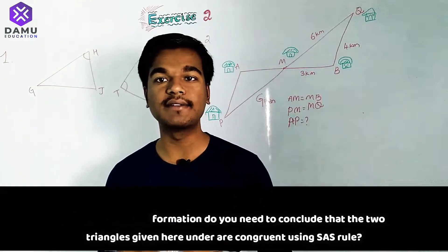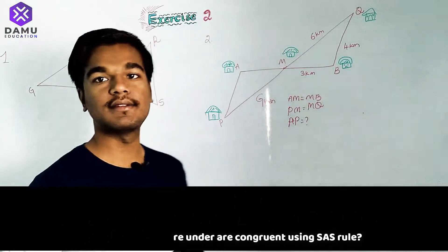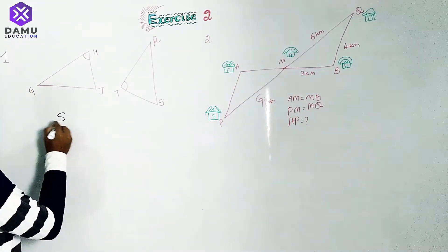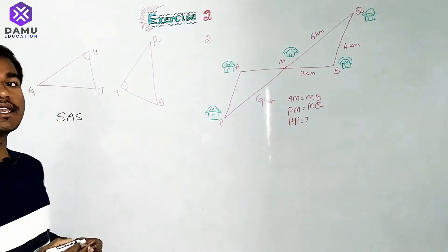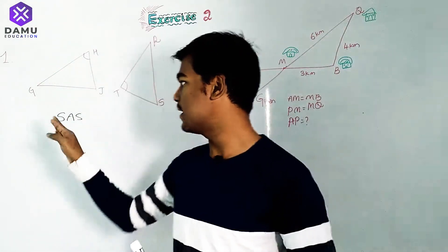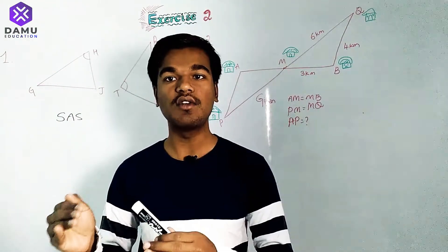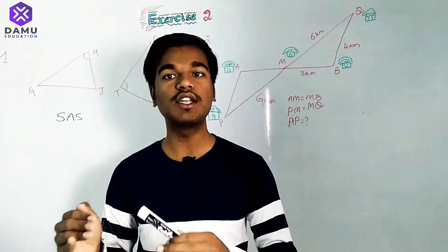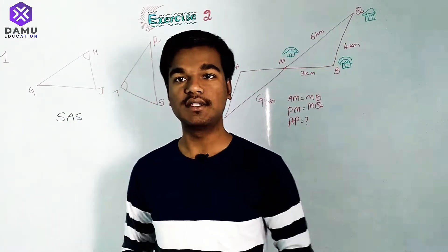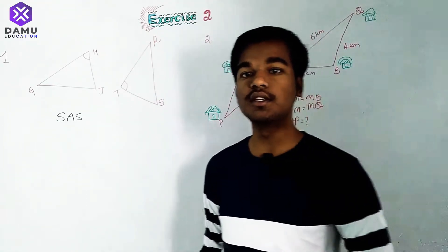They are satisfying the SAS rule. SAS means: in any triangle we take one side, then the adjacent angle on that side, and then proceed to the next side — Side, Angle, Side.